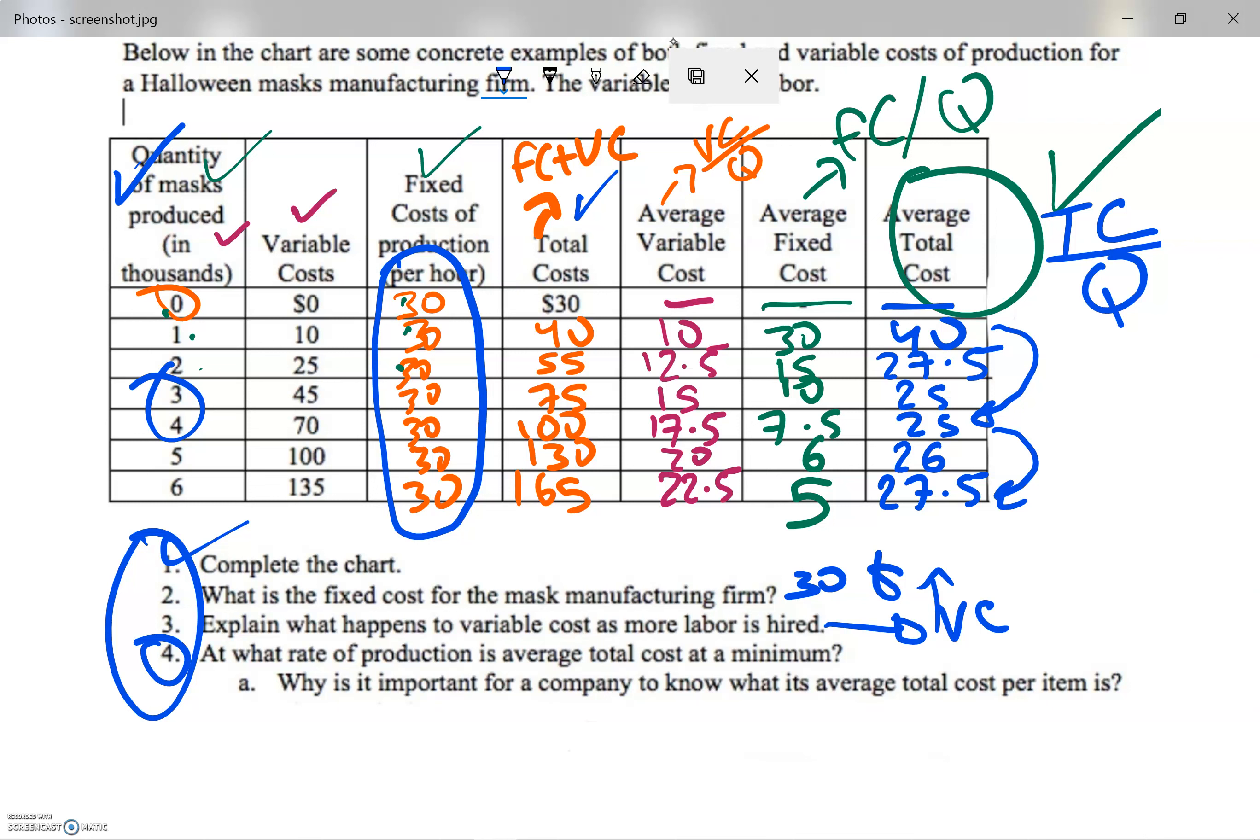However, after a point, average costs may start to rise again, as you can see in units $5,000 and $6,000, because it can become more difficult and expensive to increase output further.